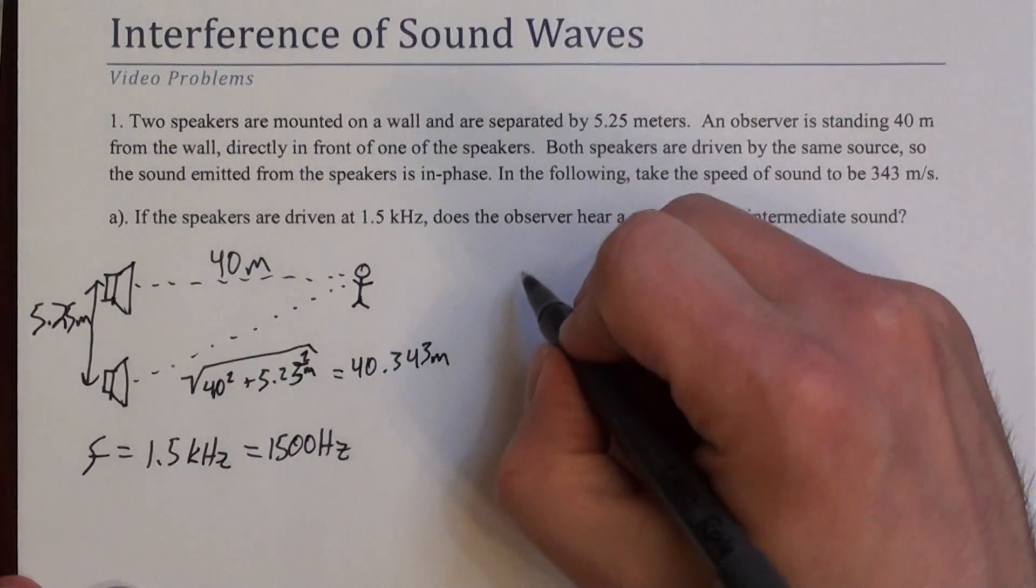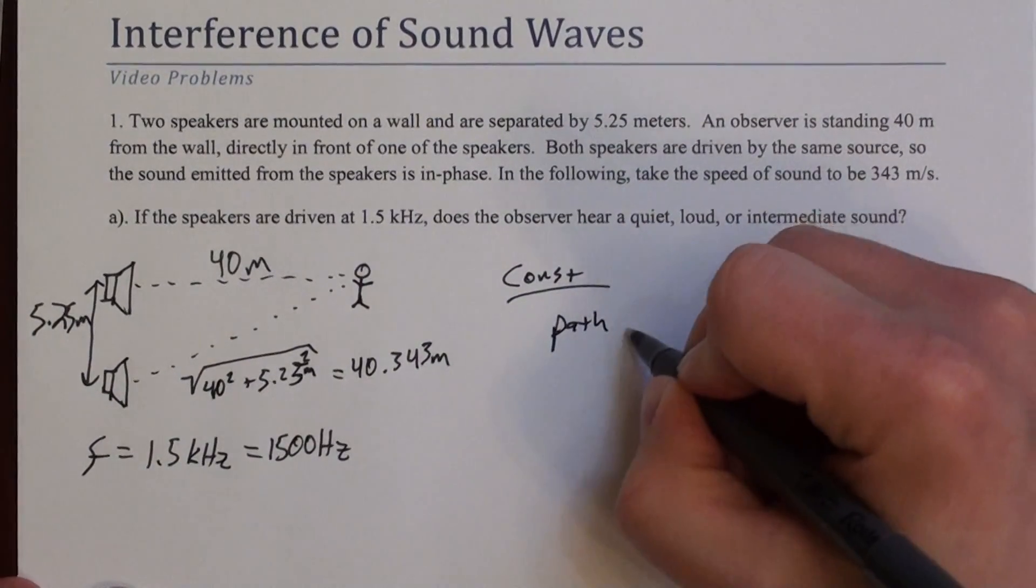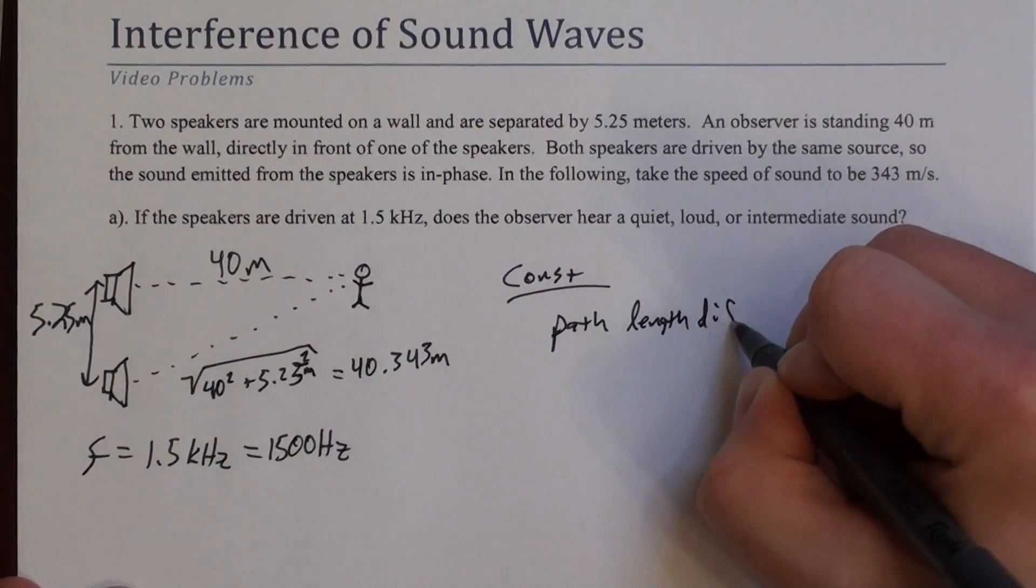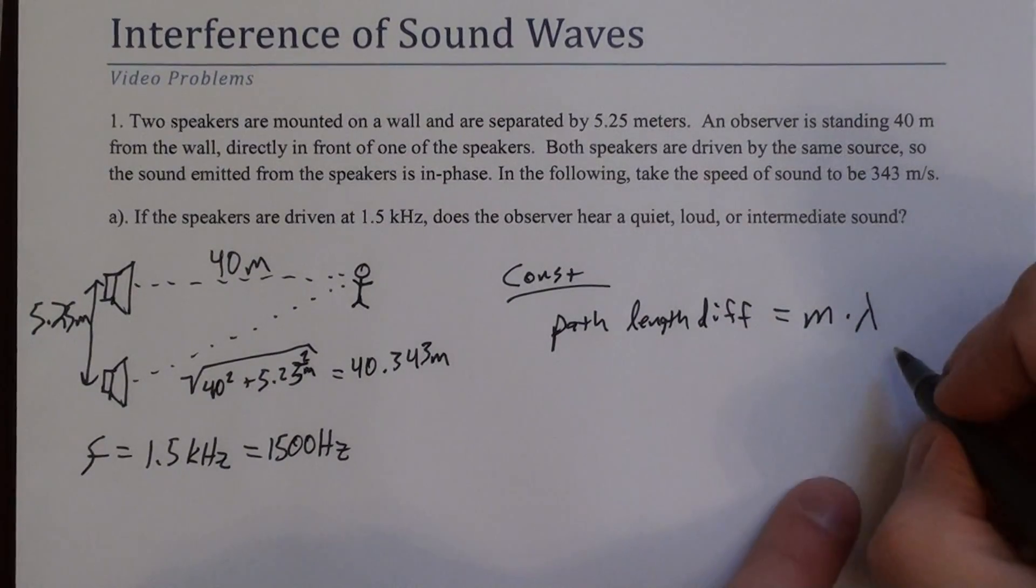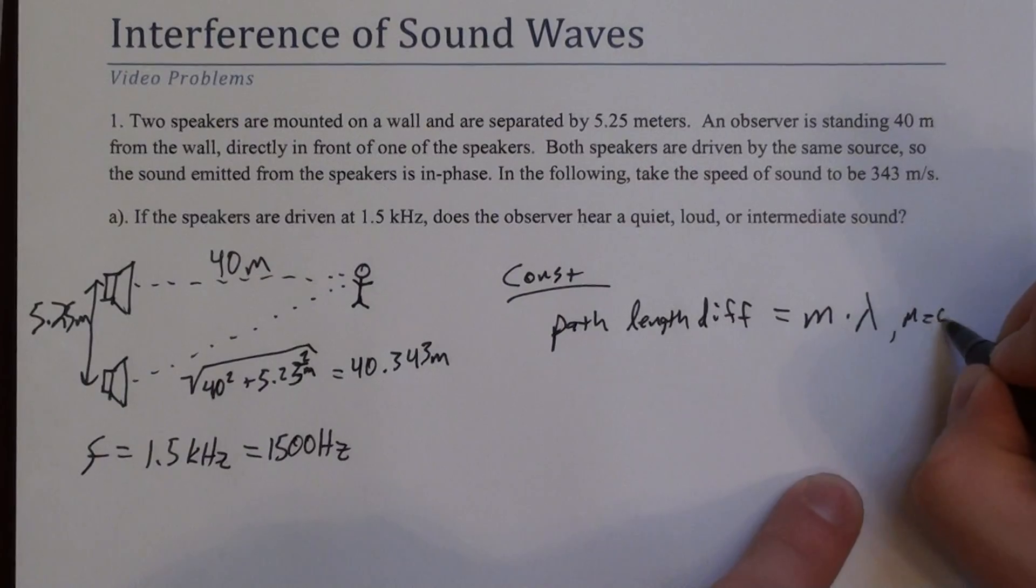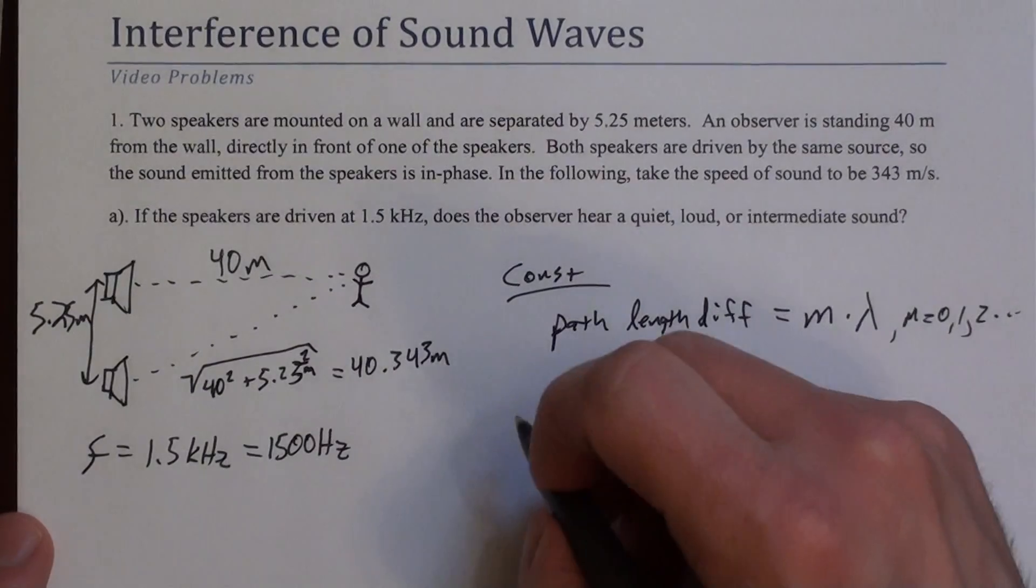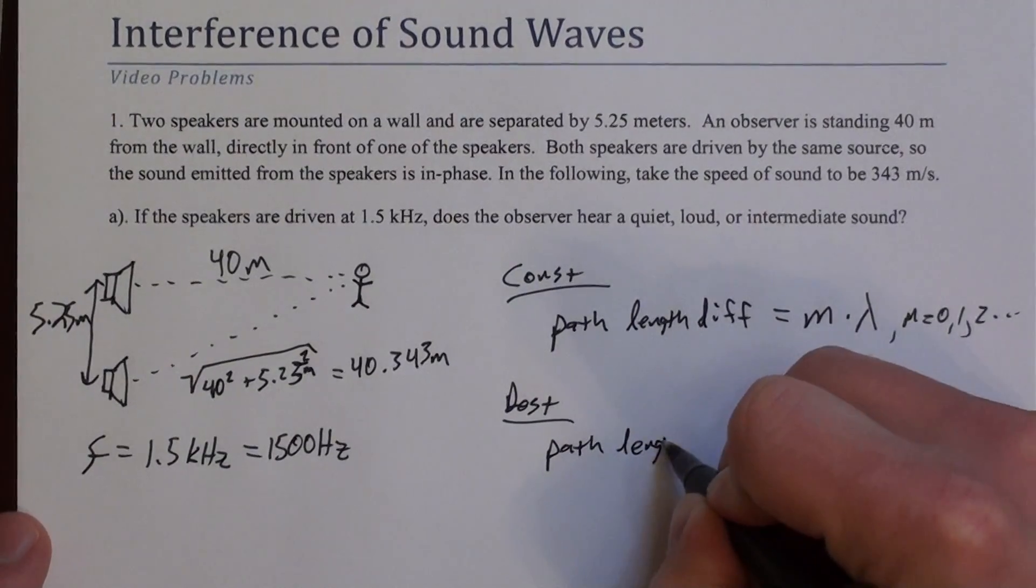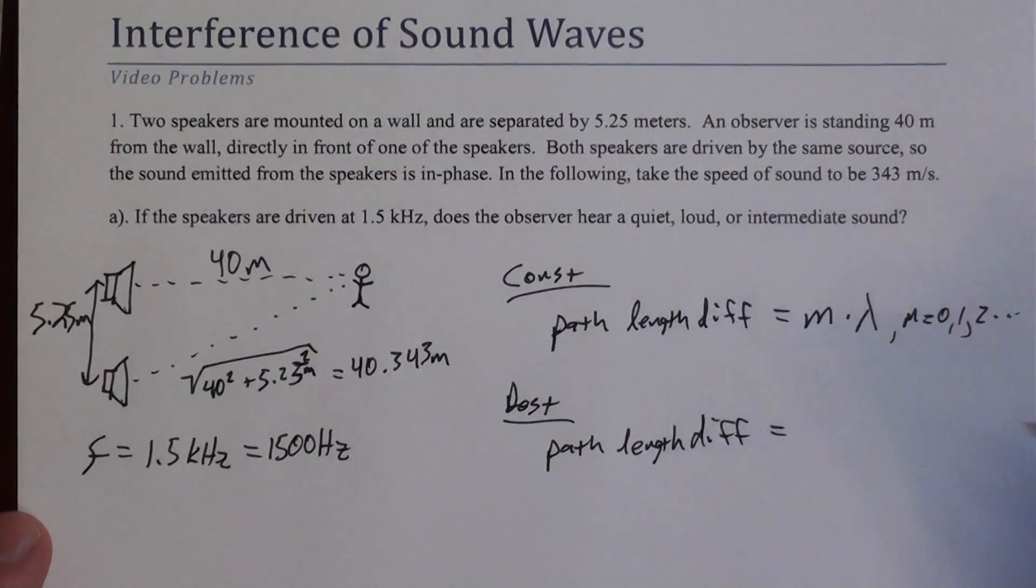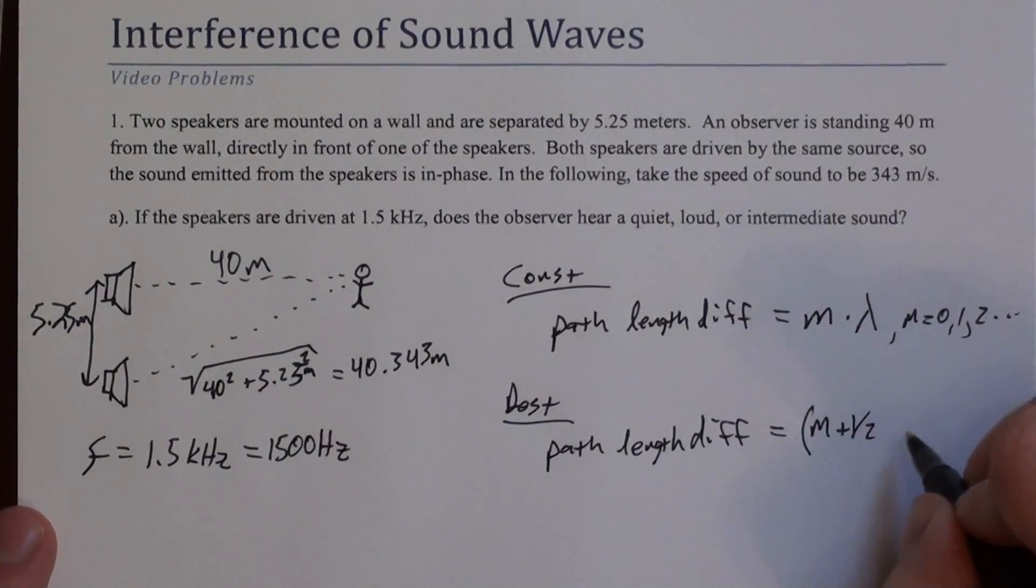So the two equations that govern this for constructive interference, we're asking for the path length difference needs to be an integer number of wavelengths. So m here is 0, 1, 2, and so forth. So that's one possibility. The other possibility is destructive interference.